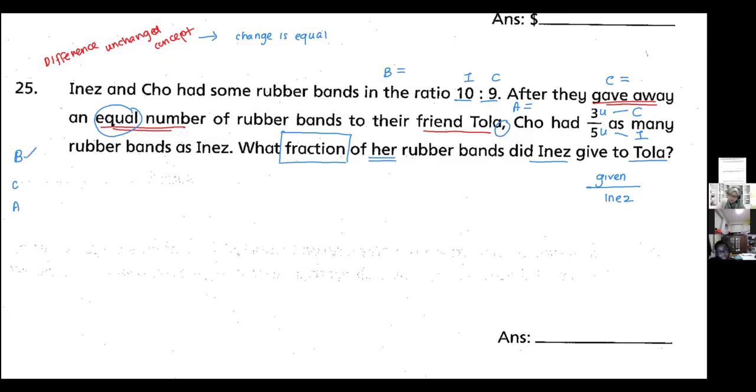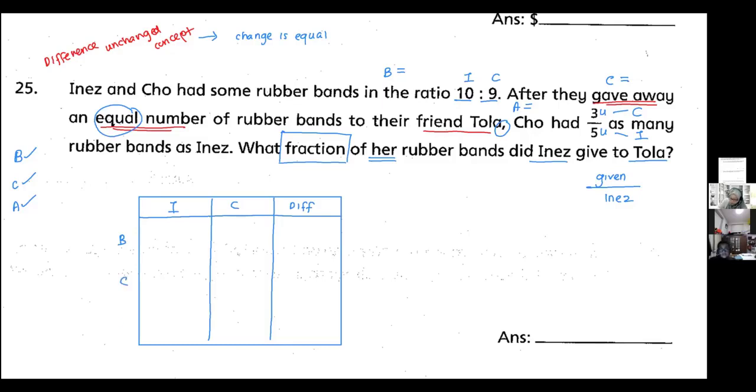Do I have my before? Yes. I have my change, I have my after. What do I do next? Draw out my box. I'm going to draw a longer one, dividing into three columns—one, two, three. Why three? Because there's a difference column at the side. So: Inez, Cho, difference. I'll put short form: before, change, after.